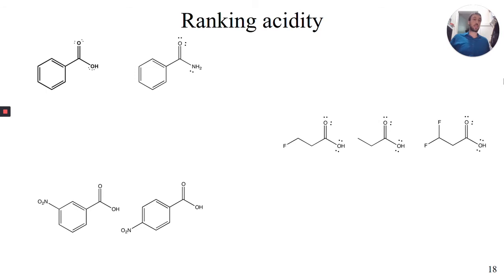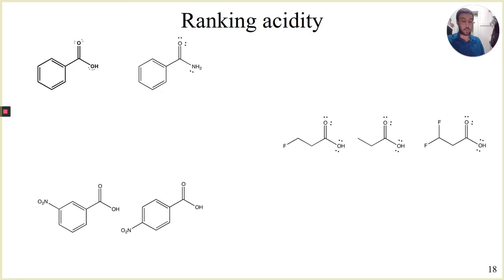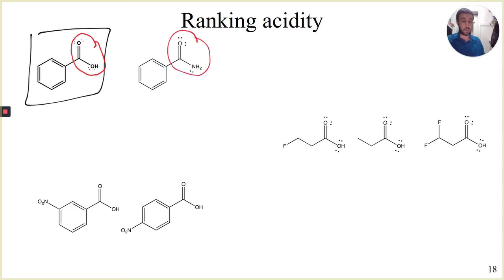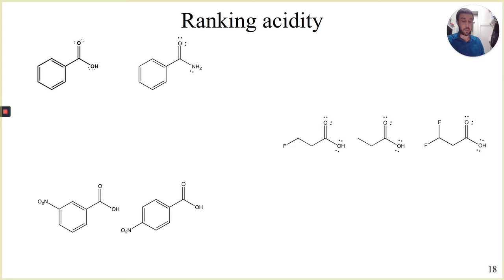Let's look at some examples. I'd like you to pause the video and work these out. Coming back — let's look at the first one. We could say this first one is clearly the stronger acid. This functional group is literally called a carboxylic acid; the other one is called an amide. Which is the stronger acid? If we're looking for acids, it can be helpful to look at the conjugate base.